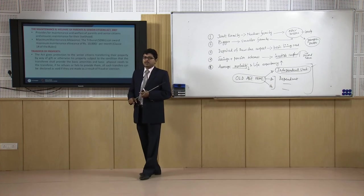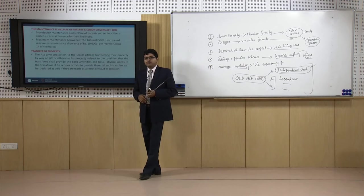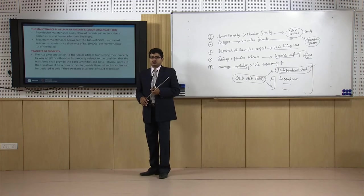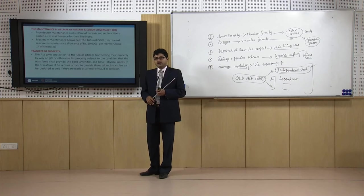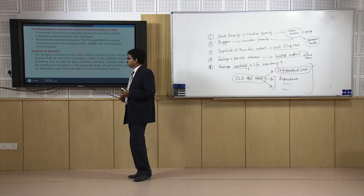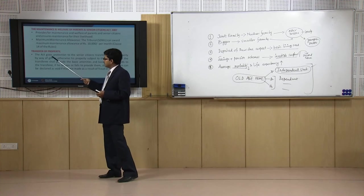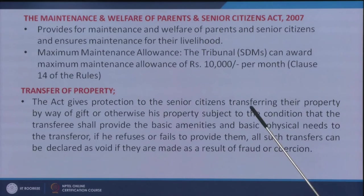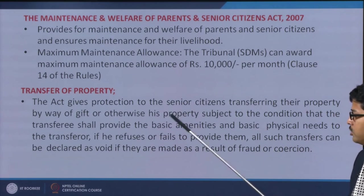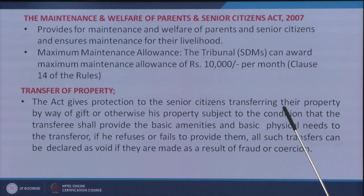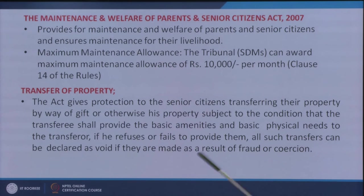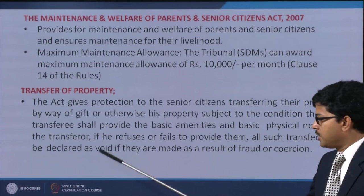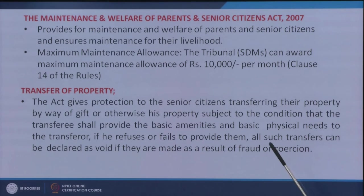Apart from that, it ensures a maximum mandatory maintenance allowance from children — the tribunal can award a maximum maintenance allowance of rupees 10,000 per month depending on the situation. So even if children are not taking adequate care of their parents, the act provides the provision to force them to provide mandatory allocation for the maintenance allowance.